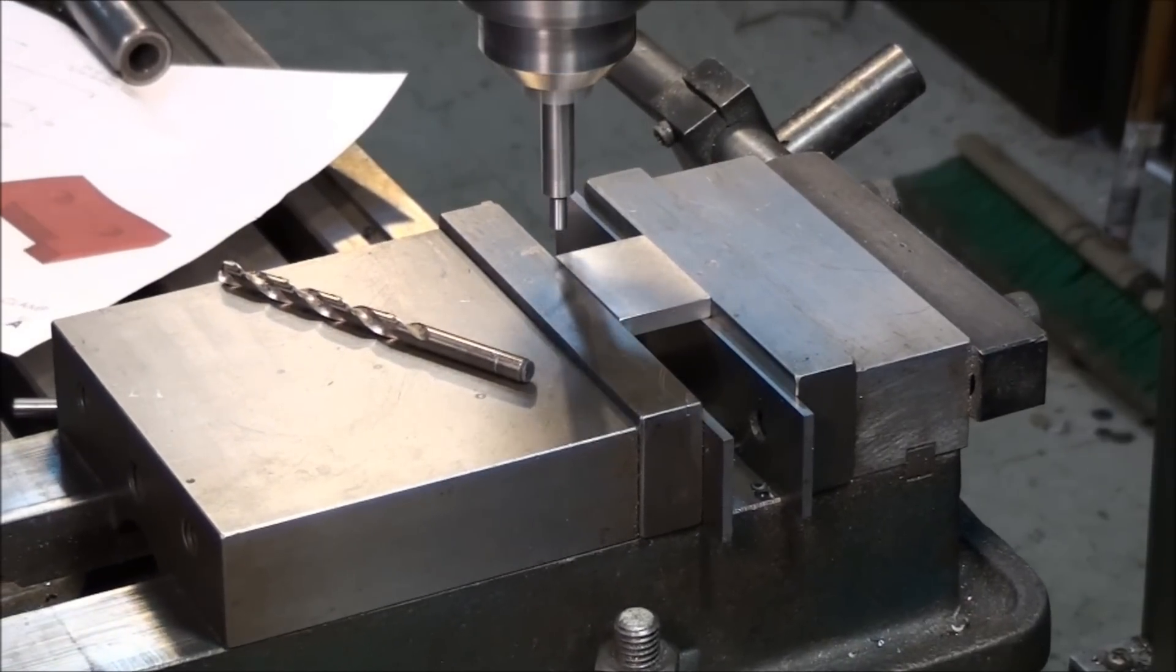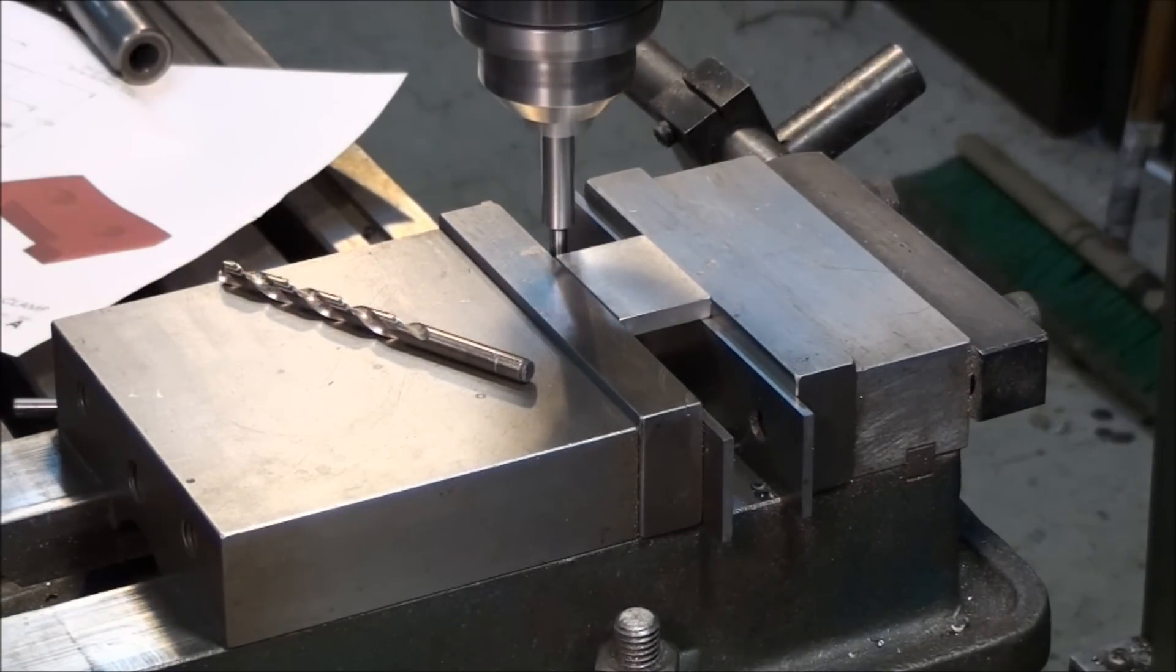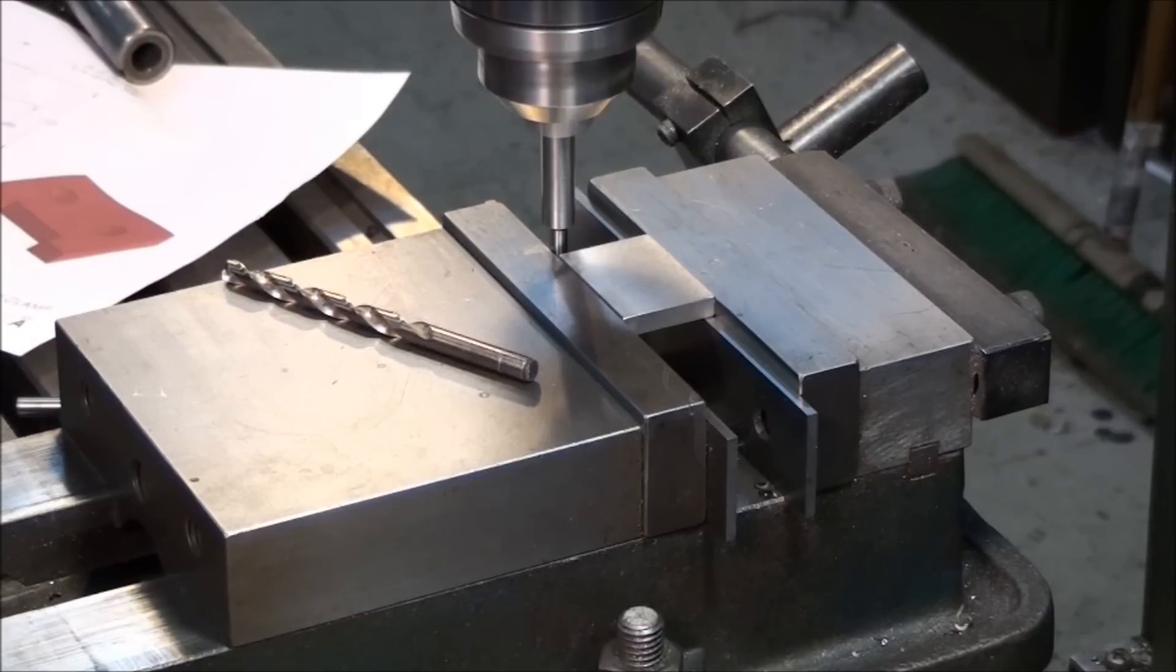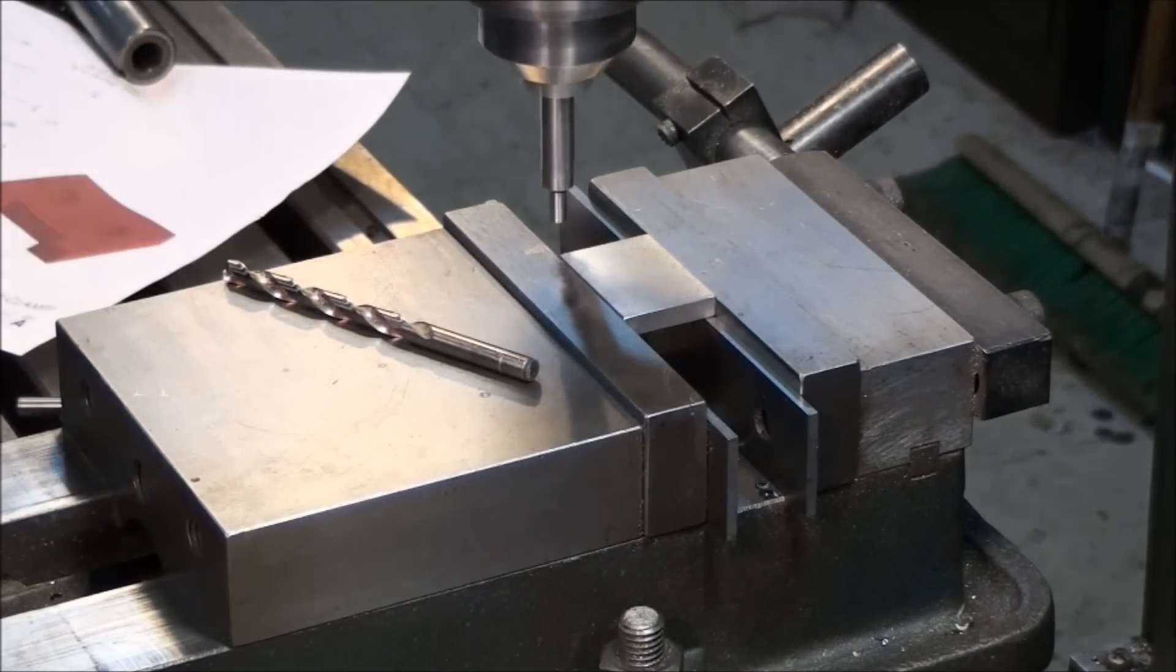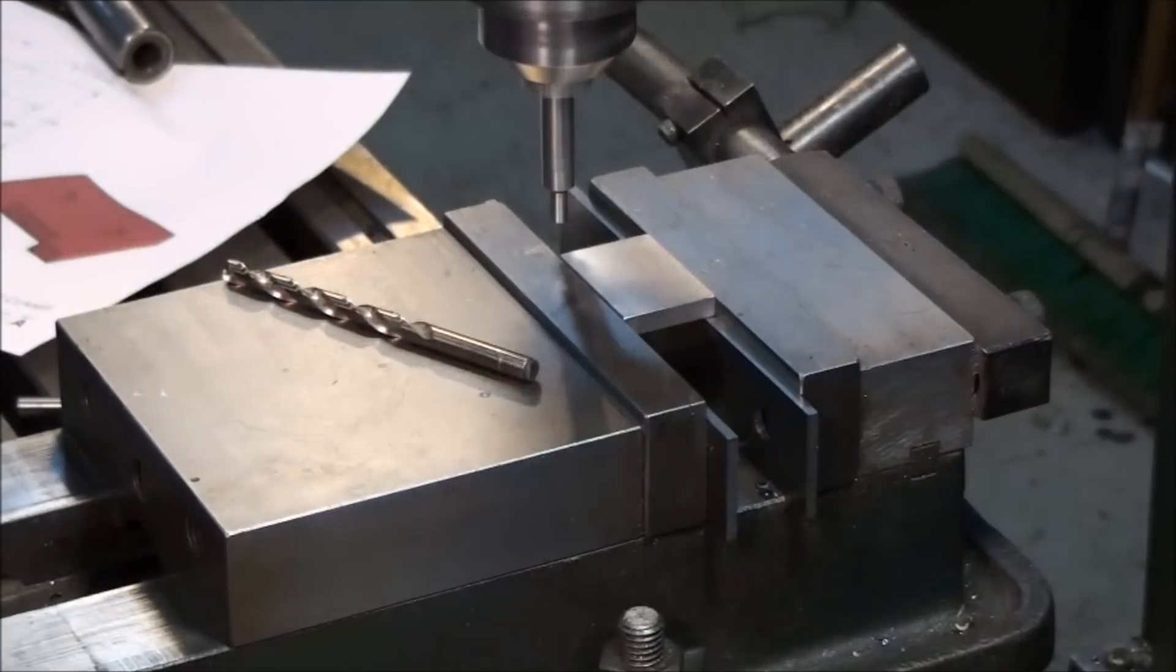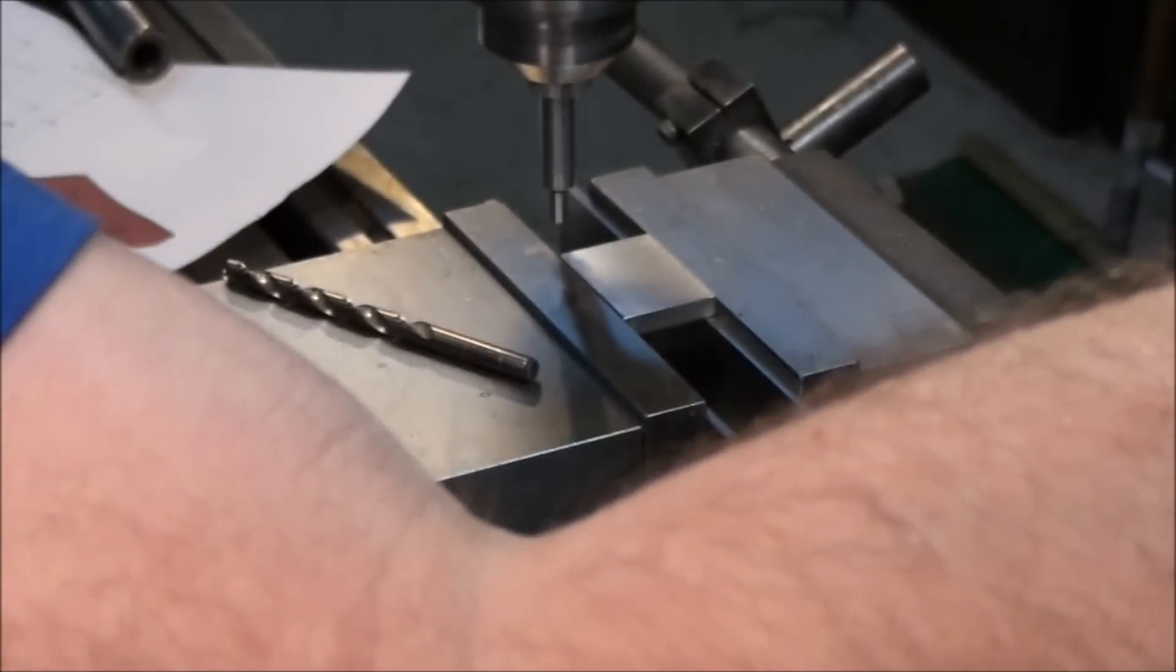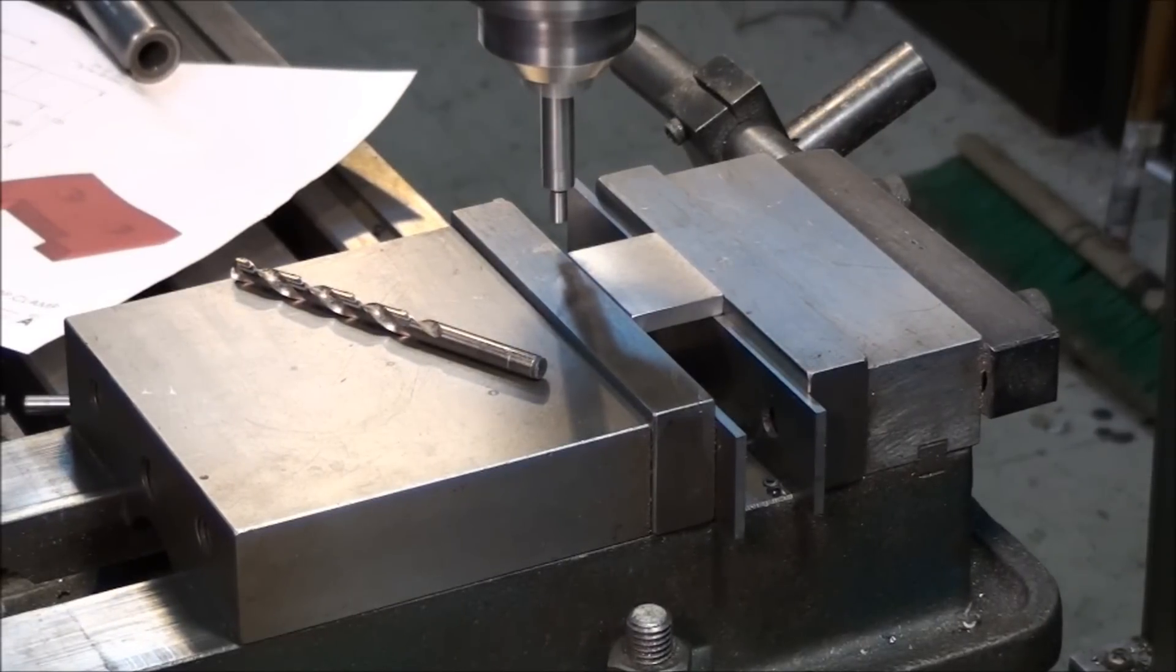Okay, now we'll do the same thing on the front edge. I'm just going to use the vise jaw because I can't reach the front edge of the part. Same difference, it's offset in a different direction. Touch it, zero out, offset half the diameter of the cutter. That puts us right on the edge.